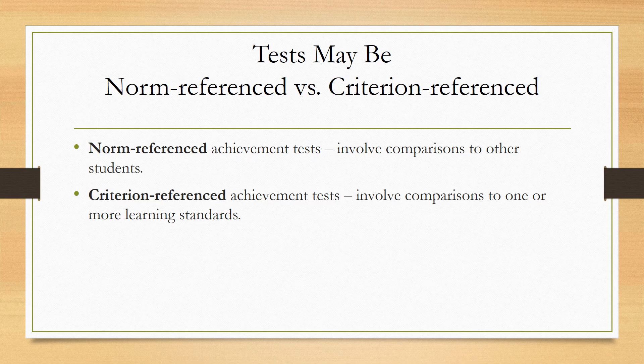Let's talk about two categories of tests: norm-referenced and criterion-referenced. Norm-referenced tests involve comparisons to other students. Test makers create a pool of questions that they test out on tens of thousands of students, run statistical analyses, and get typical responses. For example, with the SAT, they see what percentage of students get certain questions right, so they understand how a large pool of students answers these questions.